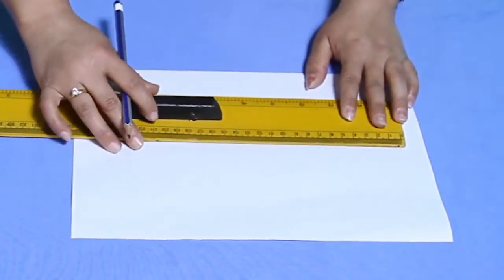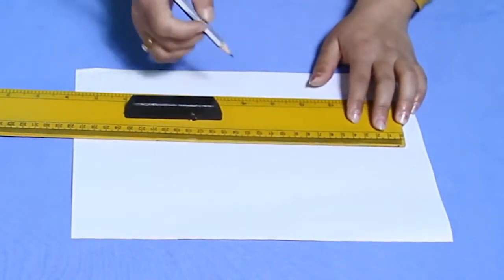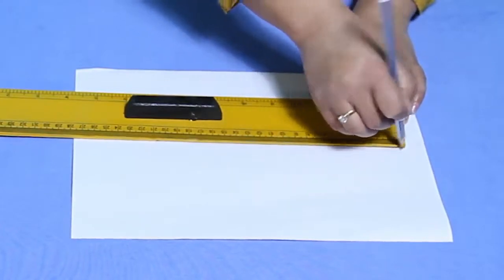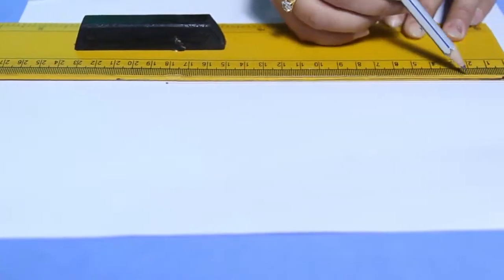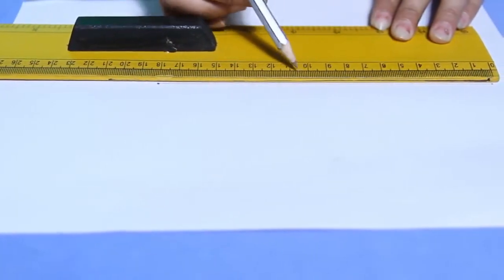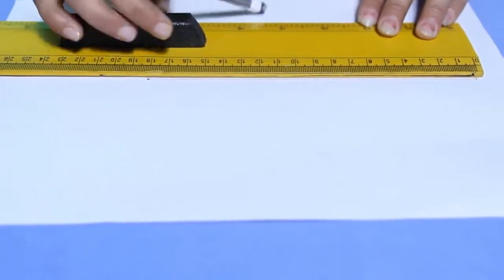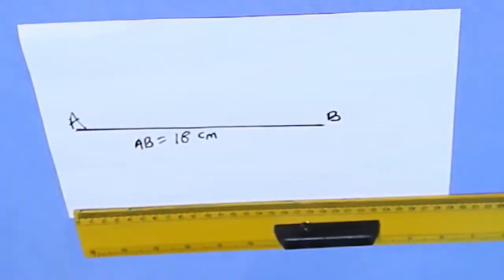To measure the line segment, place a ruler with zero mark coinciding with one end of the line segment, and then count the mark of complete centimeter. This is how we can construct and measure a line segment.